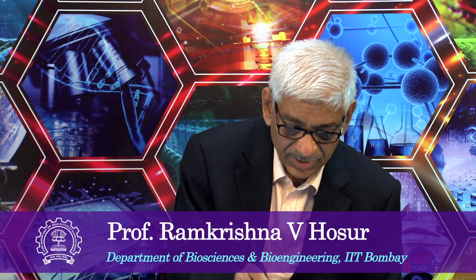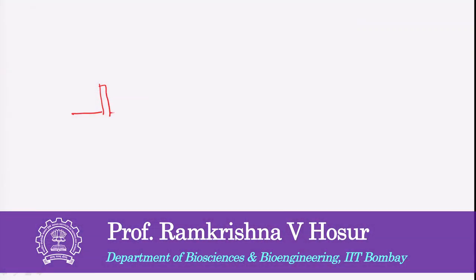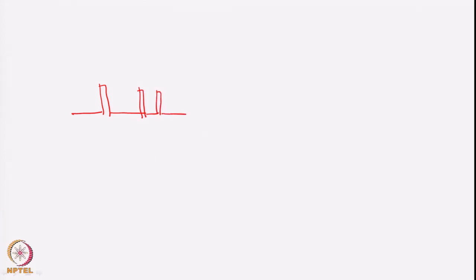In the last class, we discussed in detail an experiment called double quantum filtered COSY, which was simply a pulse sequence with three 90-degree pulses: 90x, 90x with a phase of φ, and 90x. Data was collected during the T2 period, and this is called double quantum filtered COSY, which is very similar to the COSY discussed in previous classes.